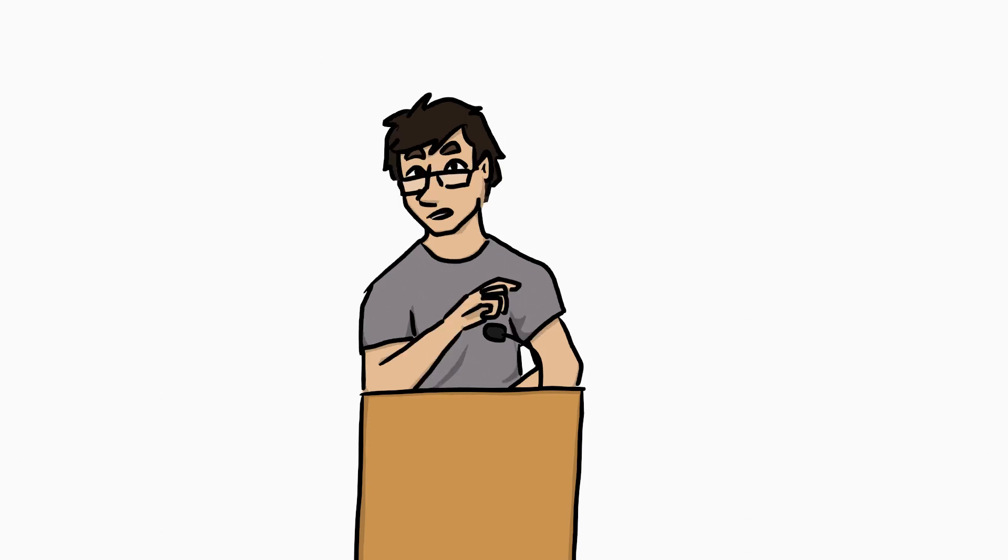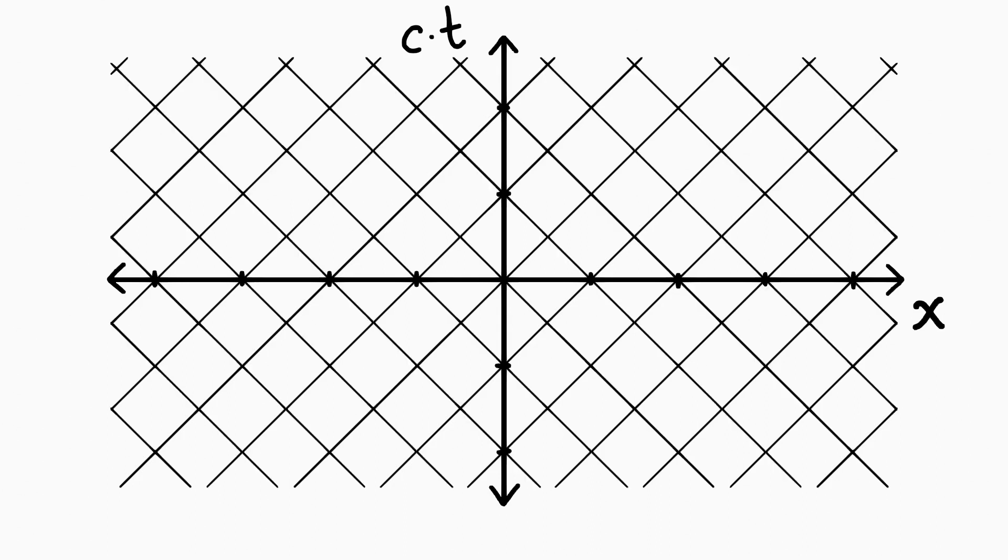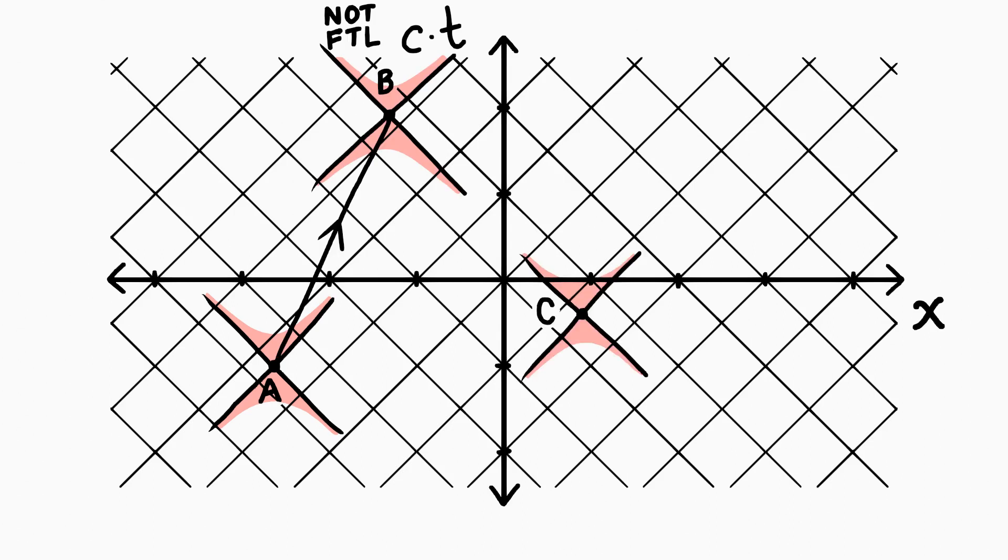For the normal flat space you and I live in, the map is pretty simple. Position goes this way, time goes that way, and if you set your units right, light travels at 45 degree angles. An event happening here can affect an event happening here, but one here can't affect one there. Something traveling slower than light must follow a path that looks something like this.